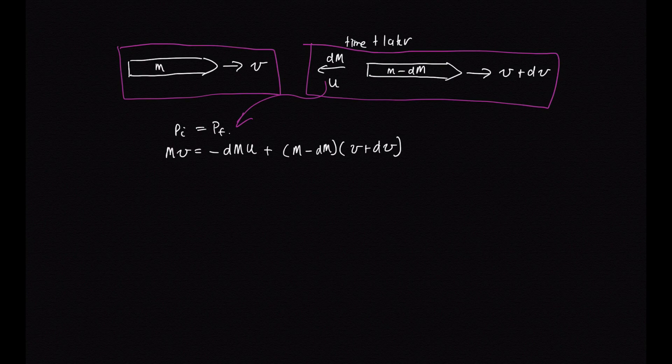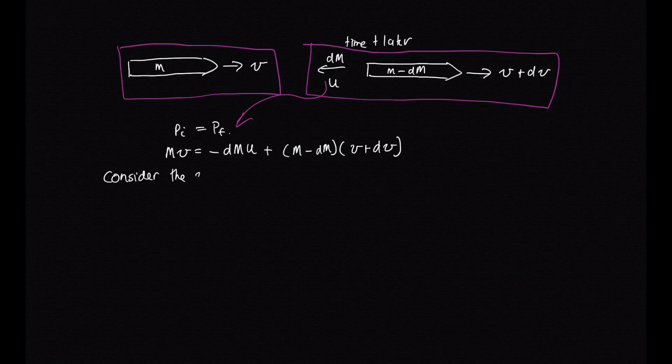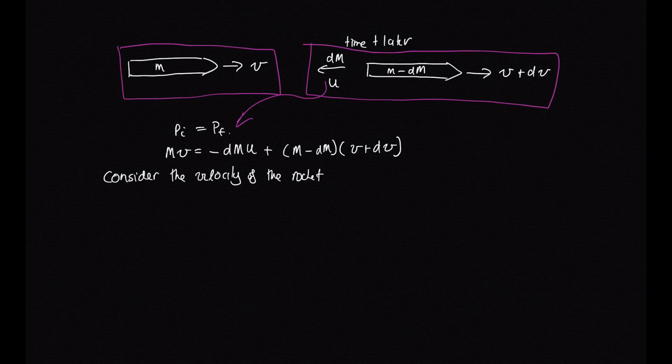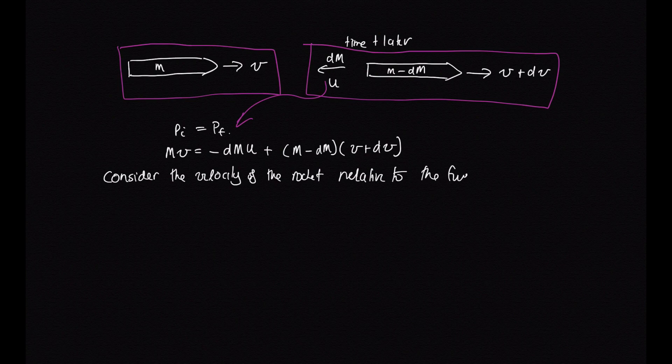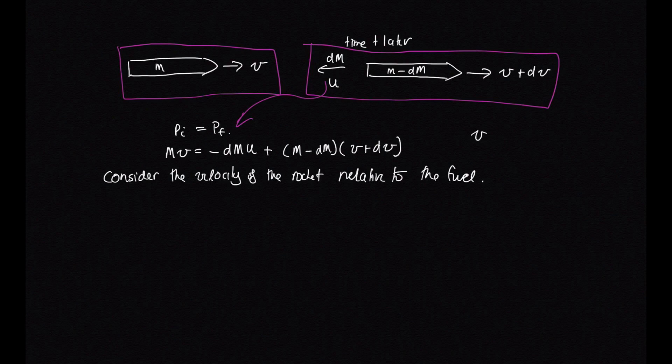Now this we can simplify a bit if we consider the velocity of the rocket relative to the fuel. So we've looked at relative velocities before. We've seen that the velocity of a relative to b was equal to the velocity of a minus the velocity of b.